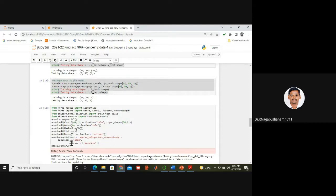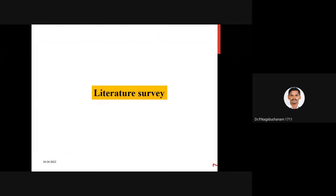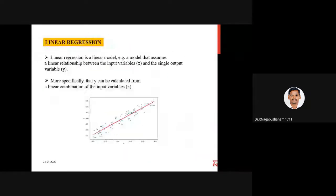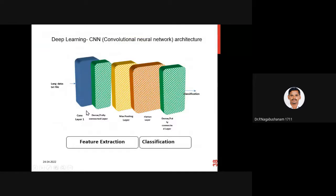This is my CNN architecture. I am using one convolution layer, one fully connected or dense layer, one max pooling layer, a flatten layer, and then one more dense layer. Before the flatten layer it contributes to feature extraction, and the flatten plus output dense layer handle the classification process. In deep learning, CNN performs feature extraction and classification together — no separate feature extraction is required.